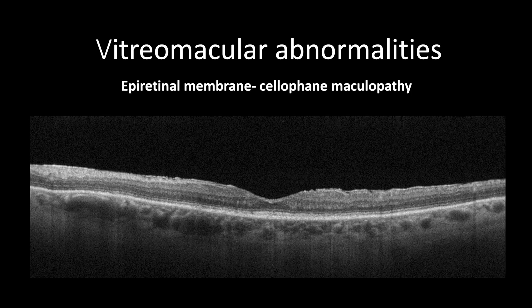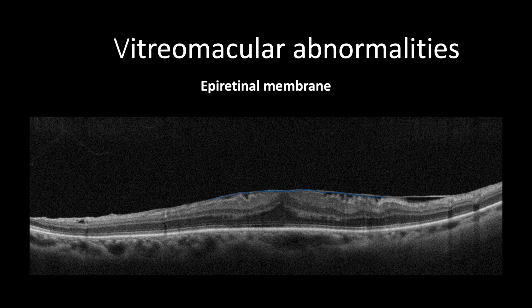An epiretinal membrane appears as a hyperreflective band, which can be thin in cellophane maculopathy or thick in advanced cases, lying over the retinal surface, which may induce corrugation of the inner retinal tissues forming pegs and hyperreflective pockets.